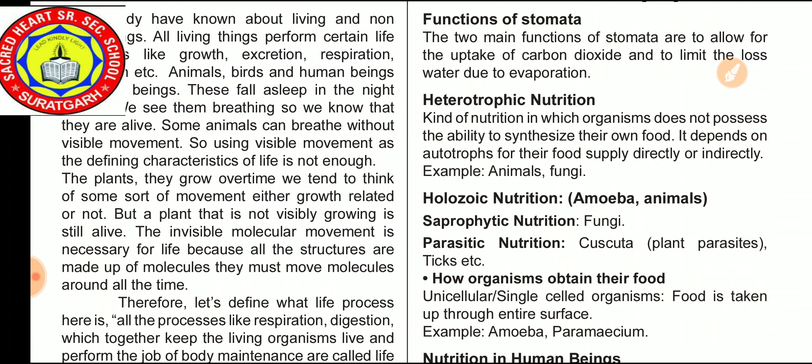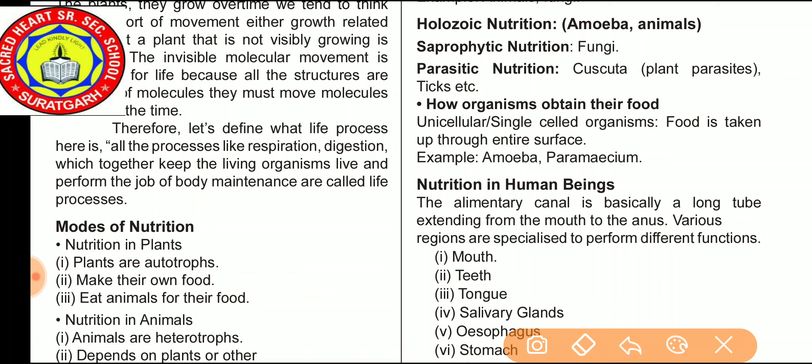Now we discuss how organisms obtain their food. In unicellular single-celled organisms, food is taken up through the entire surface — for example, amoeba. Amoeba first forms pseudopodia; by the help of these pseudopodia, the amoeba catches food particles and transfers them into the body, forming a food vacuole. In this food vacuole, enzymes come from the cytoplasm and digestion occurs. After digestion is complete, the food vacuole disappears and the waste materials are thrown outside the body.